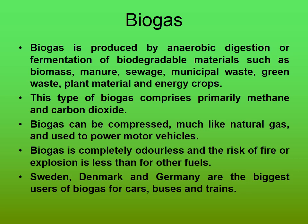Biogas is produced by anaerobic digestion and fermentation of biodegradable materials such as biomass, manure, sewage, municipal waste, green waste, and energy crops. This type of biogas comprises primarily methane and carbon dioxide. Biogas can be compressed, much like natural gas, and used to power motor vehicles. Biogas is completely odorless and the risk of fire or explosion is less than other fuels. Sweden, Denmark, and Germany are the biggest users of biogas for cars, buses, and trains.